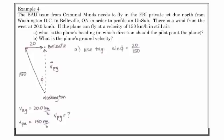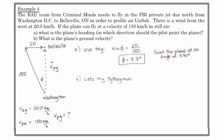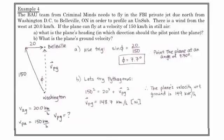So in the first case, let's use trigonometry. And we can solve for sine of phi, which is equal to 20 over 150. Phi is equal to about 7.7 degrees. And then for part B, we go into the Pythagorean theorem. Again, this is a right angle triangle. So the situation simplified a little bit. 150 squared equals 20 squared plus the velocity of the plane with respect to the ground squared. And we get 148.7 kilometers per hour due north. And so that's the plane's velocity with respect to the ground.